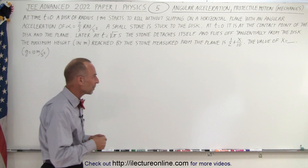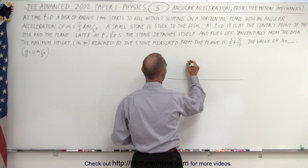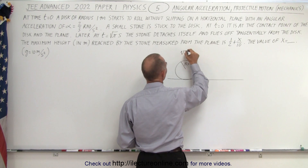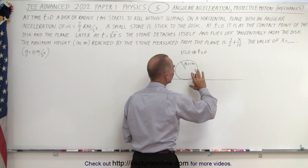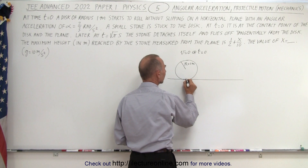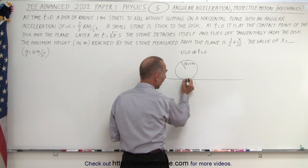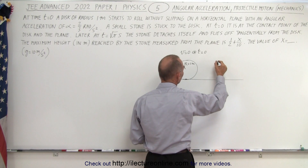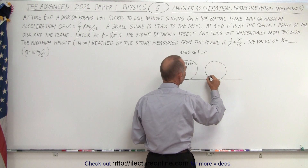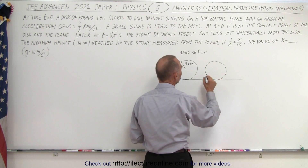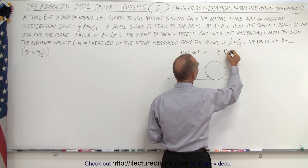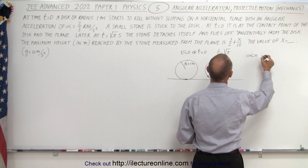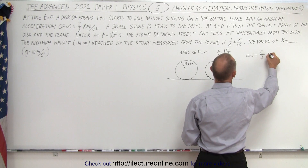Let's envision what's happening here. We have a horizontal plane and a disk of radius one meter. The velocity is equal to zero at t equals zero, so it starts from rest and begins to roll. As it rolls, there's a little rock attached to the bottom of the disk at the contact point. As the disk begins to roll it will have traveled some distance to the right and that rock will now be at some point higher. The time is equal to the square root of pi, and the disk has angular acceleration equal to two-thirds radians per second squared.